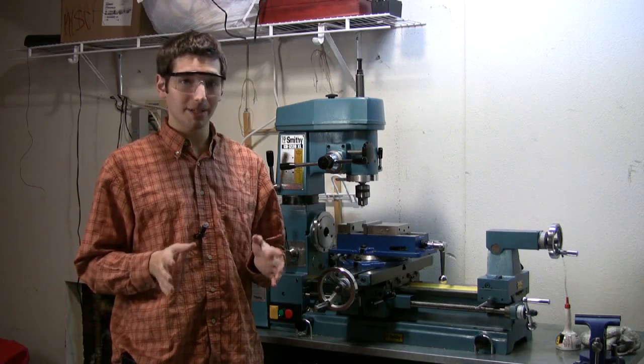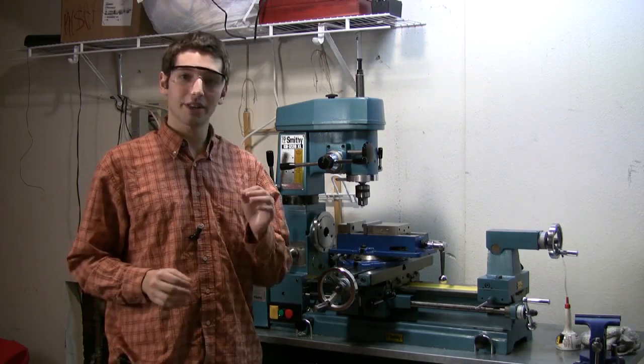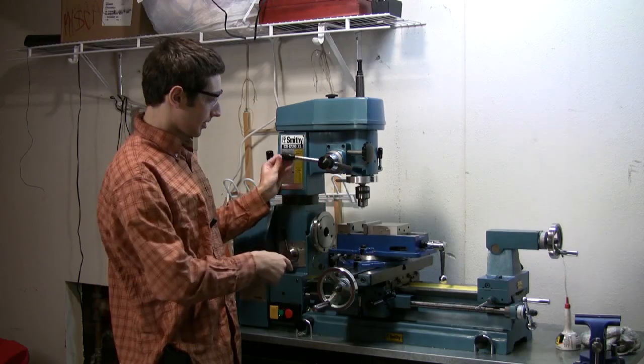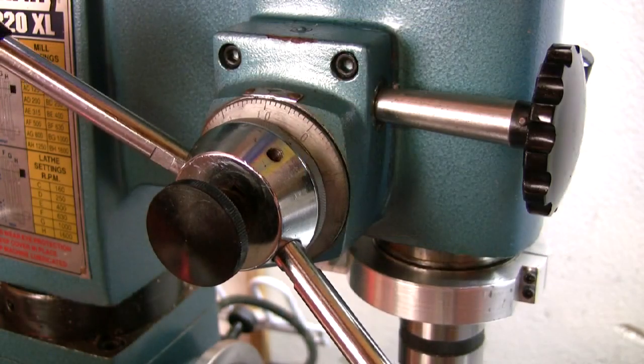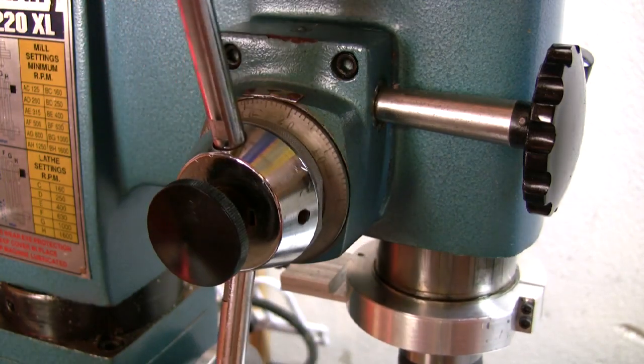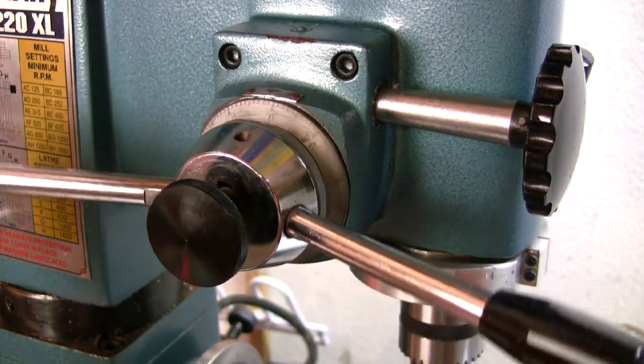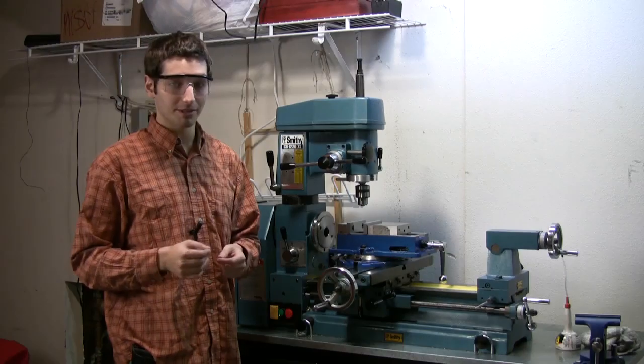We've just been getting set up and getting used to the machine, but one of the early limitations we've found is in the z-axis of the milling. The quill height knob is marked in 0.042 inch increments. If you've never worked with a machine like this before, 0.042 inch may sound pretty small.